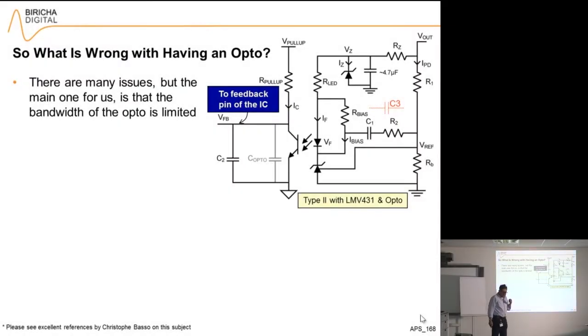Everybody knows that optocouplers are a little bit of a pain to work with. So what is actually wrong with optocouplers? There are many issues, but the main one for us is that the bandwidth of the optocoupler is limited.